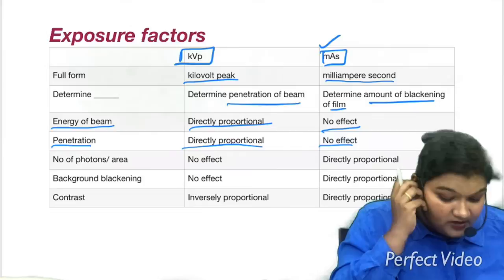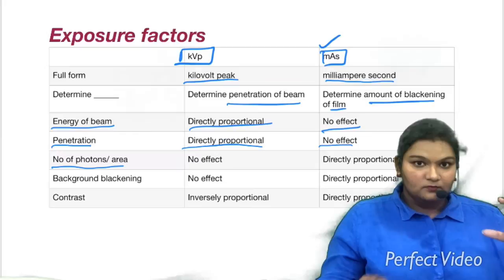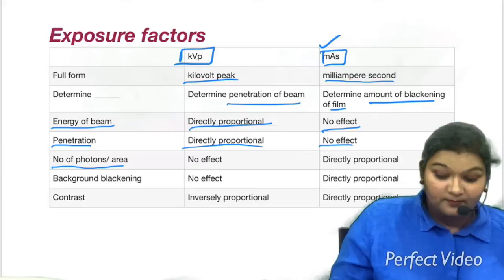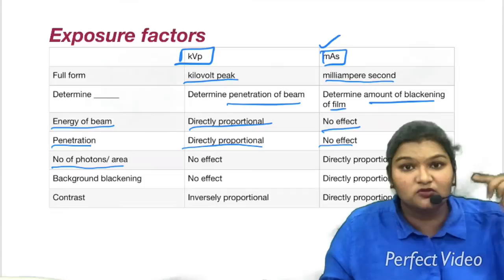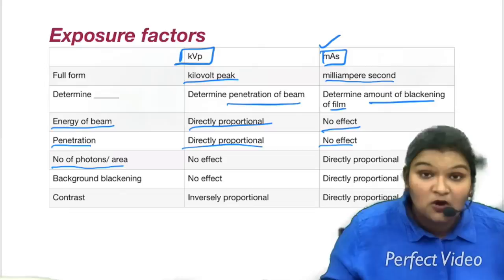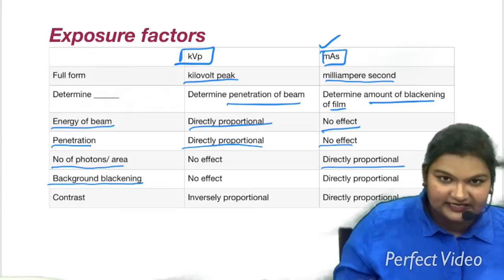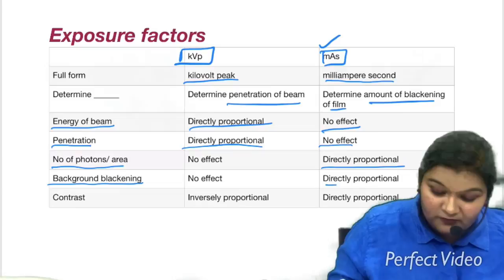The degree of blackening depends on the number of photons per area — more photons striking a particular place, more will be the blackening. So the number of photons is directly proportional to MAS. Background blackening is also directly proportional to MAS.